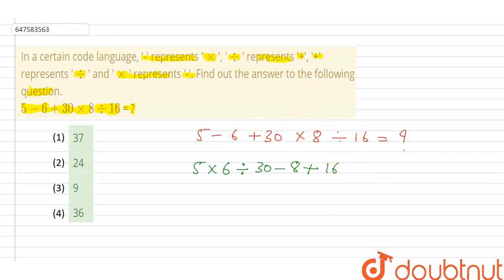Now guys we can solve this. We know this equation is solved by BODMAS rule. BODMAS rule: this is divide, this is multiply, this is addition, this is subtraction. So first divide.